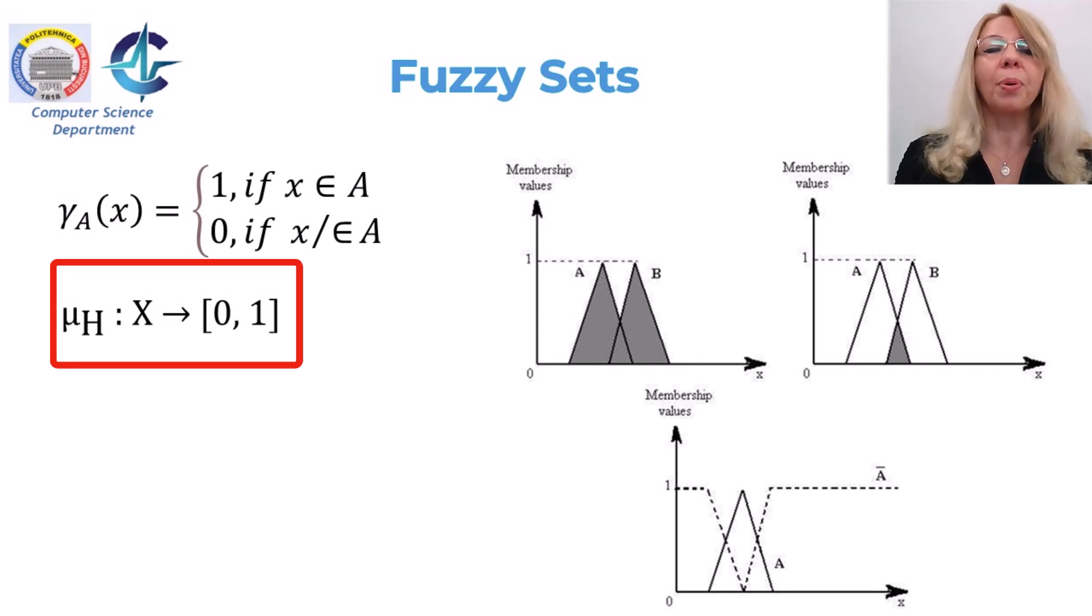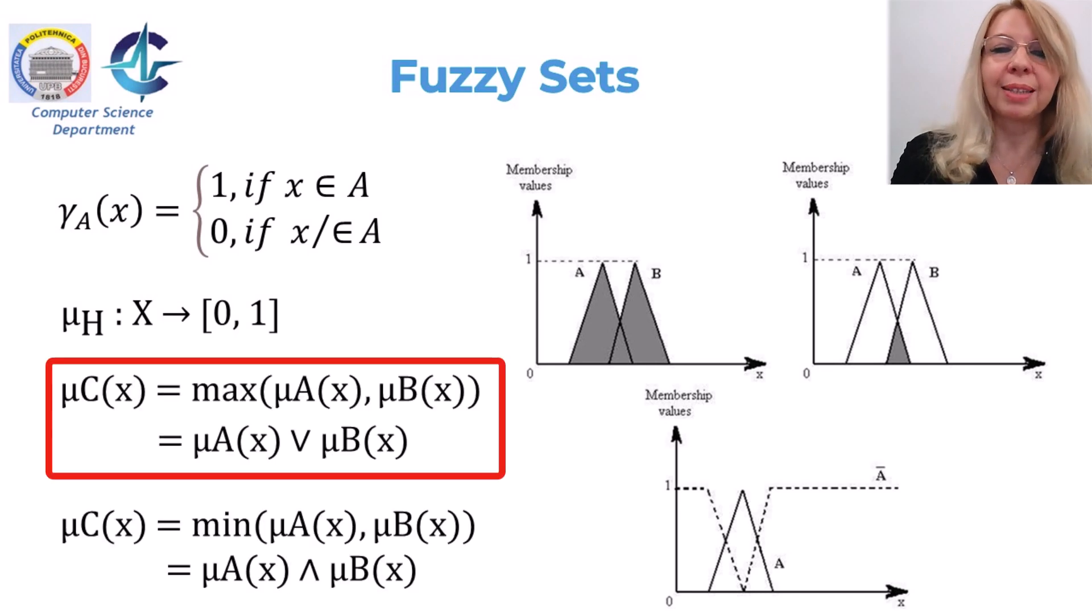Let's talk about operations on fuzzy sets. Some operations on fuzzy sets that will be used in fuzzy control are the union of two fuzzy sets A and B, which is a fuzzy set C, whose membership function is related to those of A and B by a maximum operation, as it can be seen.